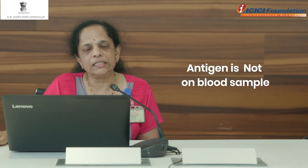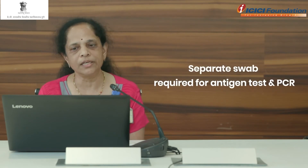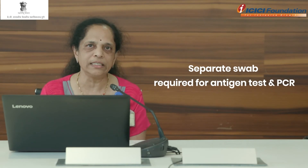In the next session, we will see how we do the antigen test after swab collection. For the antigen test, we usually collect the nasopharyngeal swab. Remember, unlike some other infections, we do not do the antigen test on a blood sample — it is an immunochromatographic test. If you want to do the RT-PCR test in cases that come negative by rapid antigen test, a separate swab is required. The swab used for antigen testing cannot be used for RT-PCR testing.